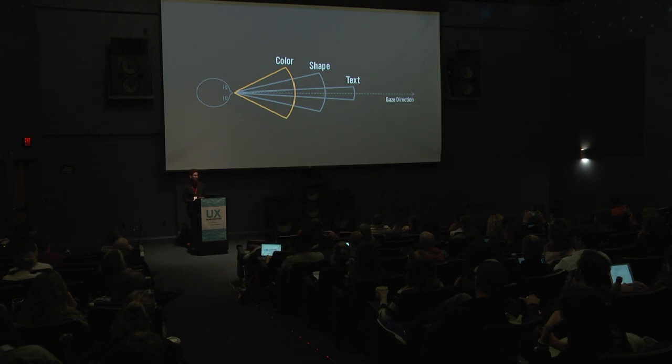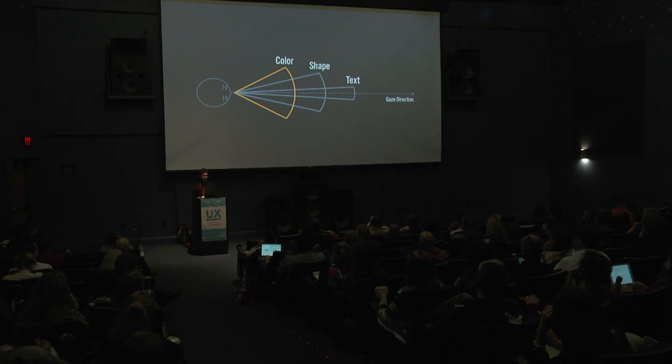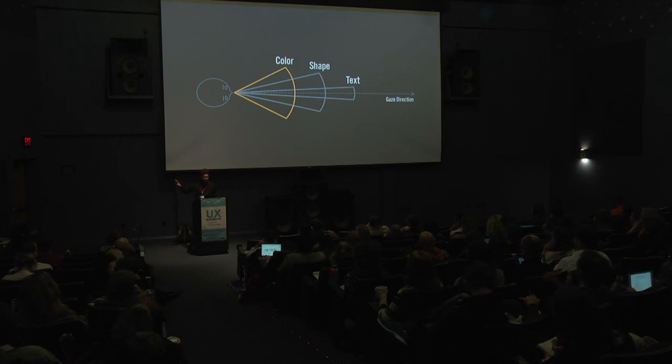When you look at a computer screen at arm's length, the area you actually see clearly in sharp detail is about the size of a dime — this is called your central or foveal vision. We can only understand the full screen because our eyes scan and our brain builds a larger picture from what we scan. One benefit of color is that our ability to perceive it extends farther out from our gaze direction than things like text or shape. But our ability to see color fades as objects extend into the periphery, requiring larger and larger blocks of color for recognition.